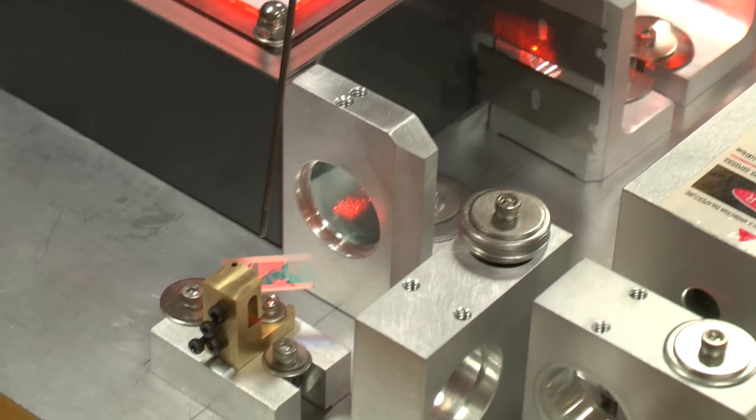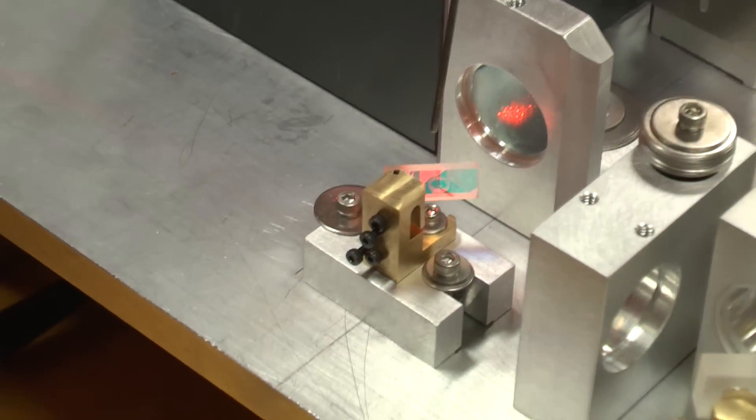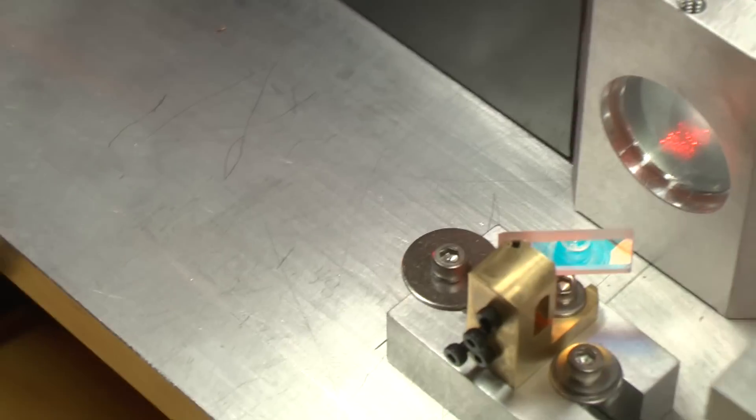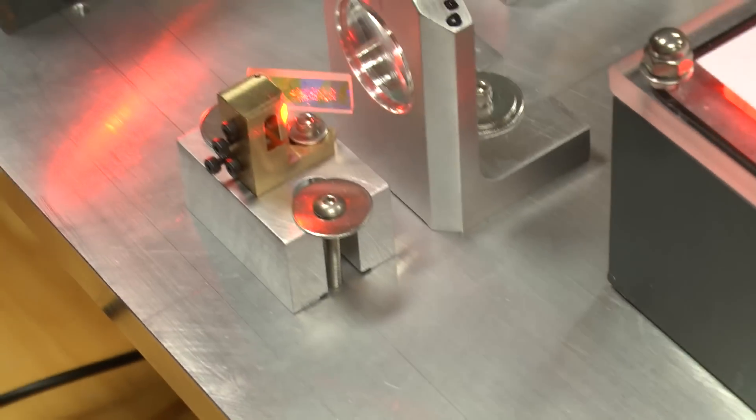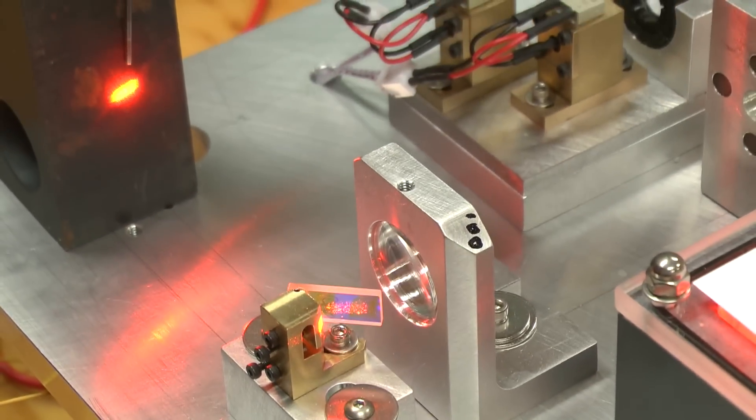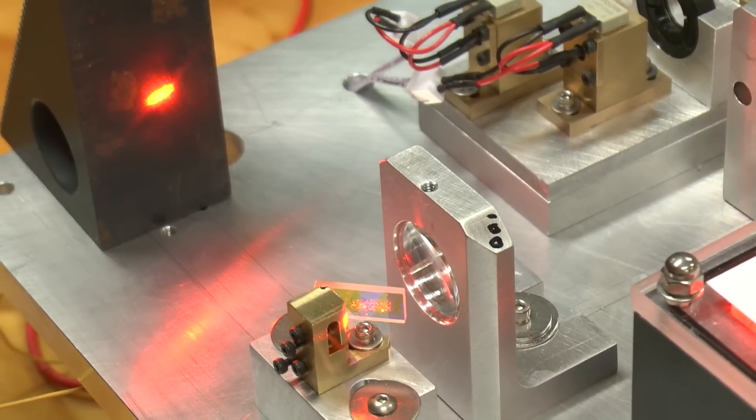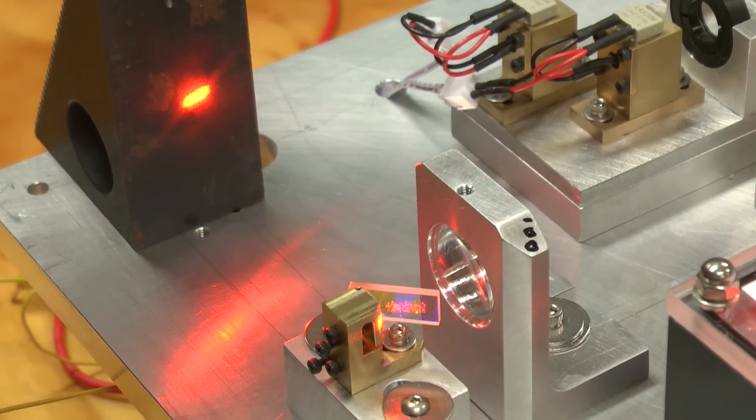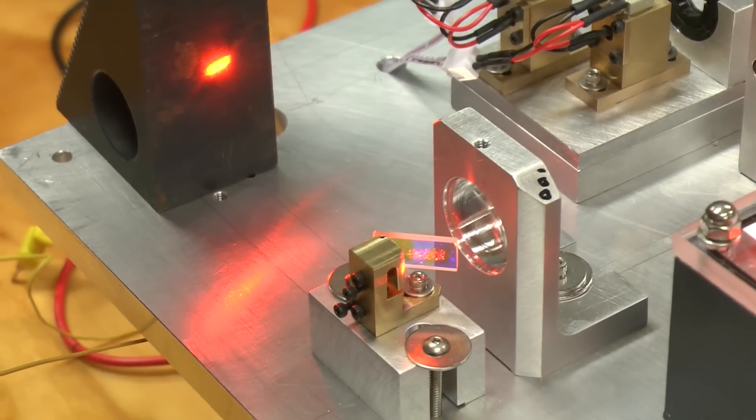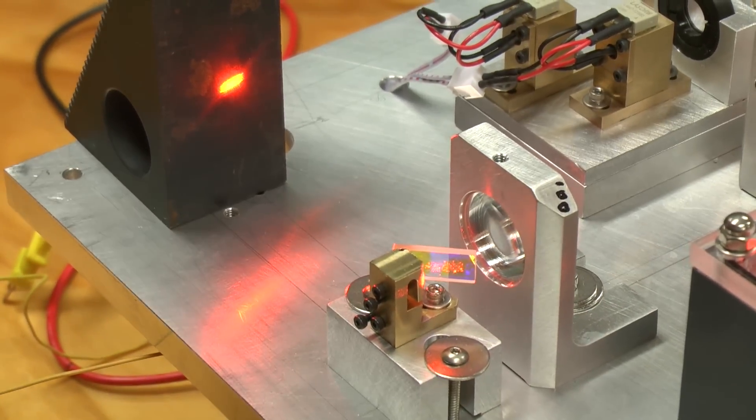The final beam then bounces off of this dichroic filter from Laser Wave, passes through this dichroic filter from Laser Wave, and then would normally hit a scanner mirror on its way out of the projector. I've stopped it here on one of the most matte black surfaces I had in order to take a measurement of the beam at this point.